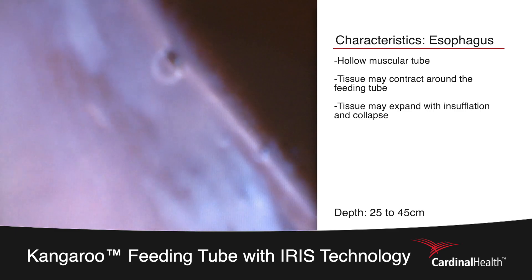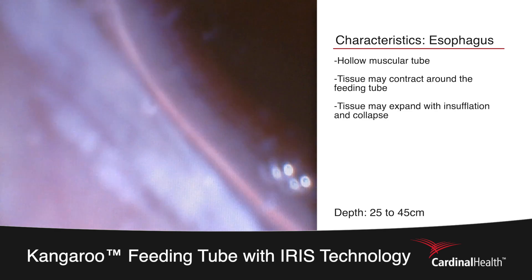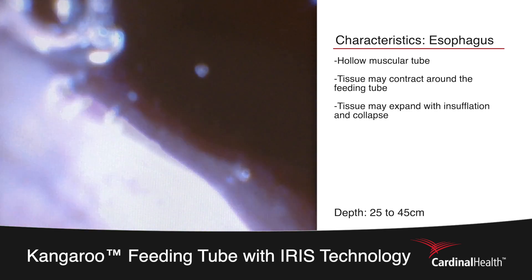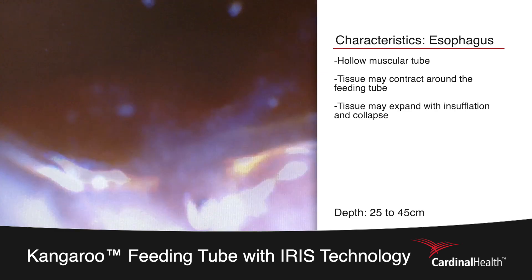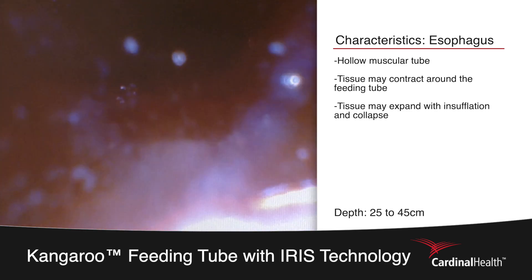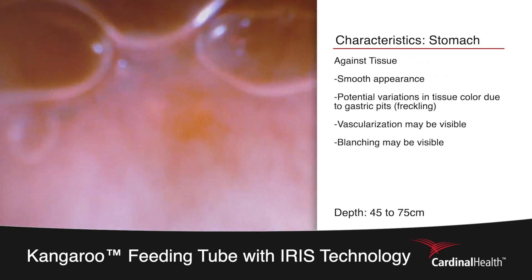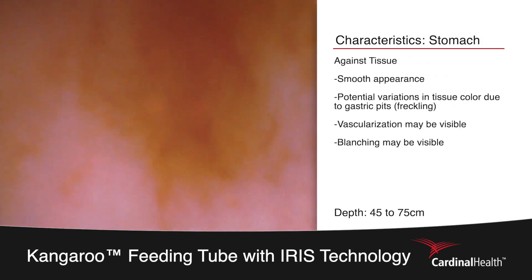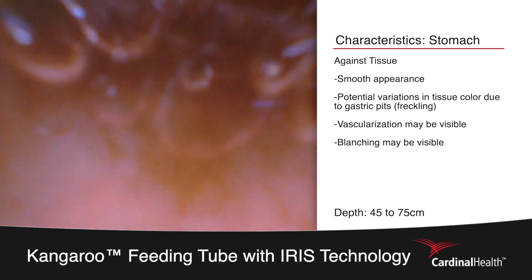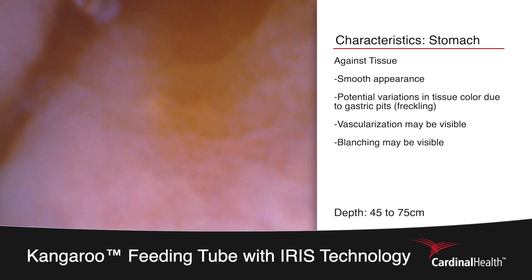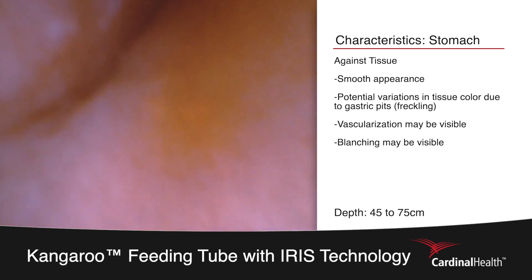Continue to progress down towards the lower esophageal sphincter to about the 50 centimeter mark, where you should be entering into the stomach. The tissue of the stomach differs from that of the esophagus. It can be easily visualized by the smooth tissue and the presence of gastric pits, which resemble freckling. We'll also be looking for a large cavernous space and the presence of rugal folds.